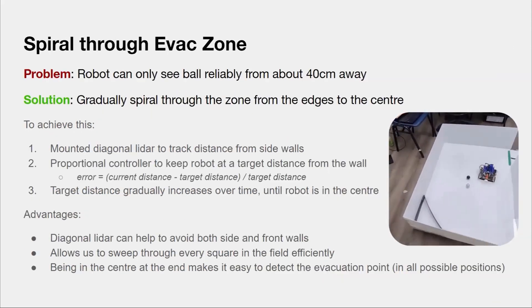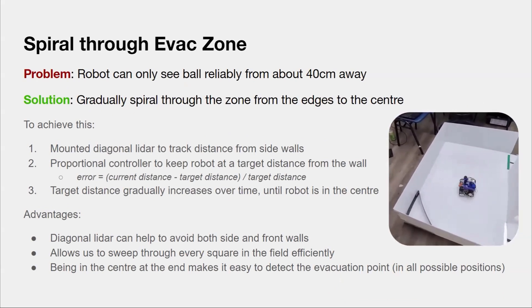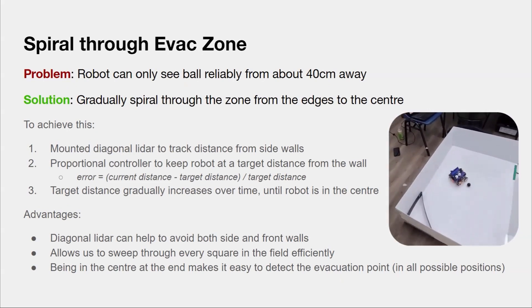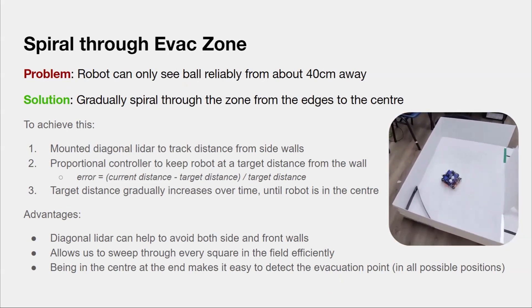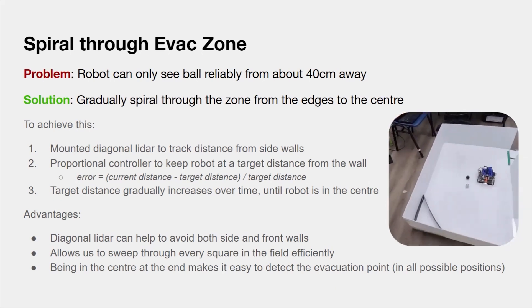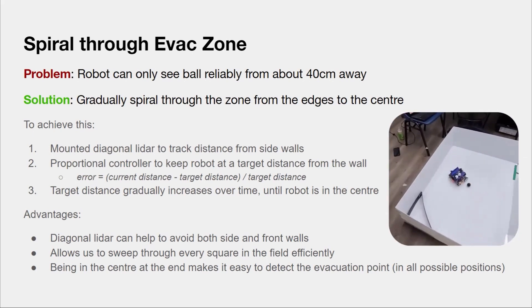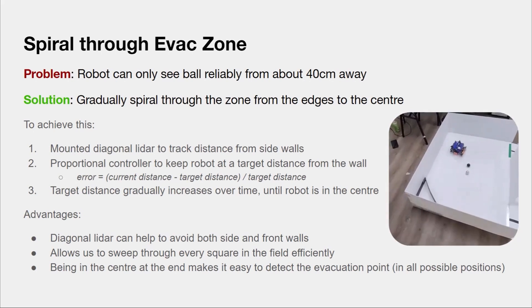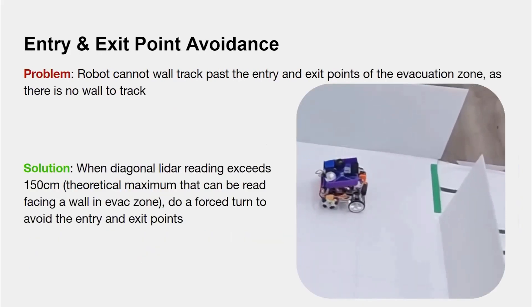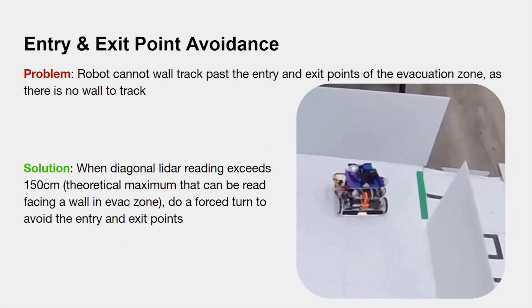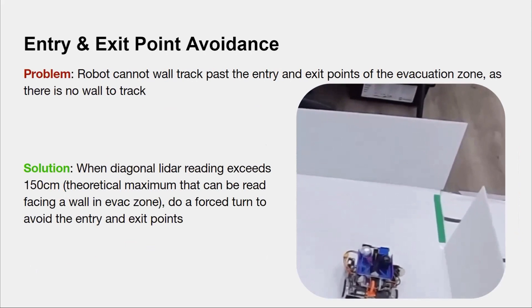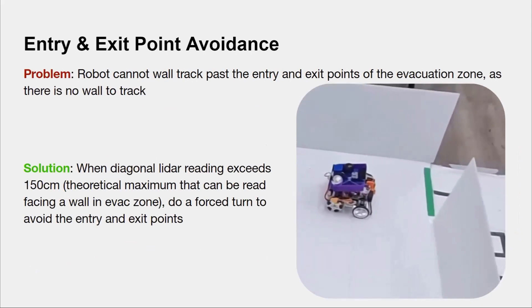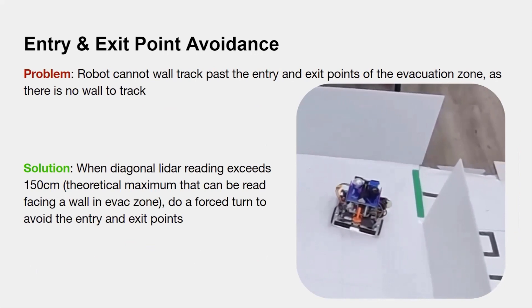Since the robot can only see the ball reliably using camera from about 40 cm away, we gradually spiral from the edges to the center using a mounted diagonal LIDAR to track distance from the wall. With a P controller to keep the robot at a target distance from the wall, we increased the target distance over time so the robot would end up roughly in the center. The diagonal mounting allows it to avoid both the front and the side walls. This approach allows us to sweep through every square in the field efficiently, and being centered at the end makes it easy to detect the evacuation point as it's equidistant from all possible locations. To prevent the robot from exiting the evac zone since there is no wall to track, we made the robot do a forced turn to avoid the entry and exit evac points when the diagonal LIDAR reading exceeds 150 cm, since it's the maximum that can be read from an evac zone wall.